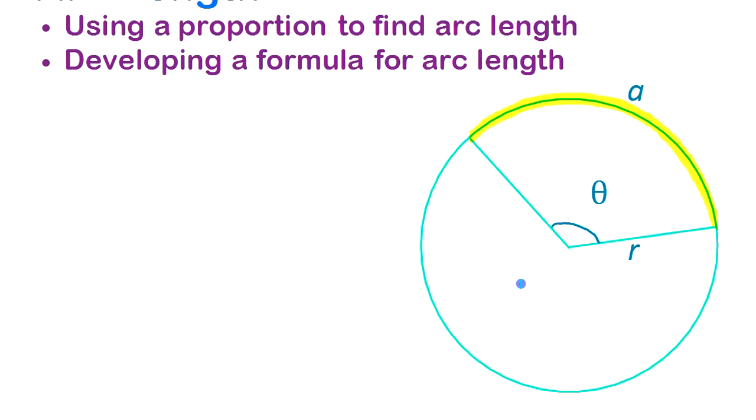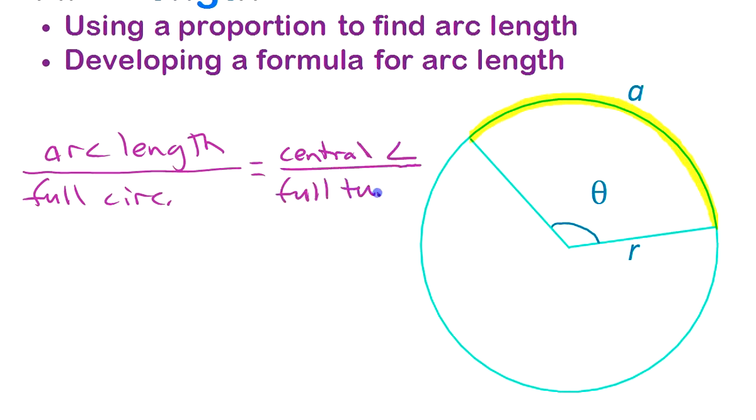So we're going to set up a proportion and use that to find any arc length for any angle. In other words, the length of the arc around the outside, that arc length divided by the full circumference, should be the same ratio as this angle out of that full turn. So the central angle divided by a full turn, full rotation.